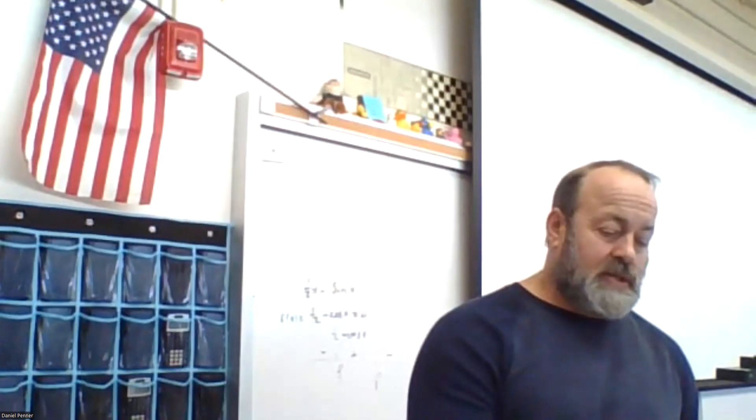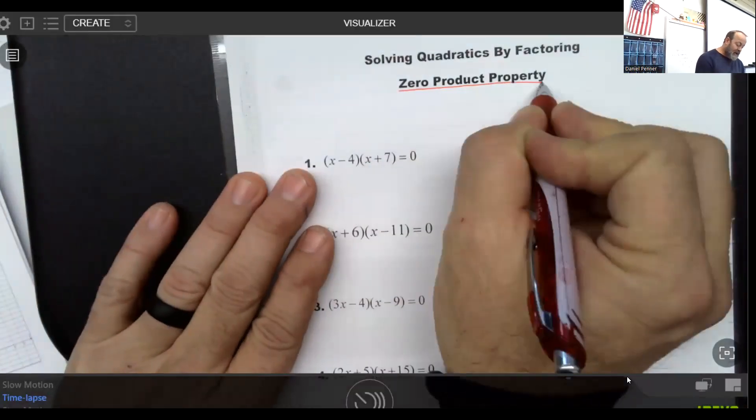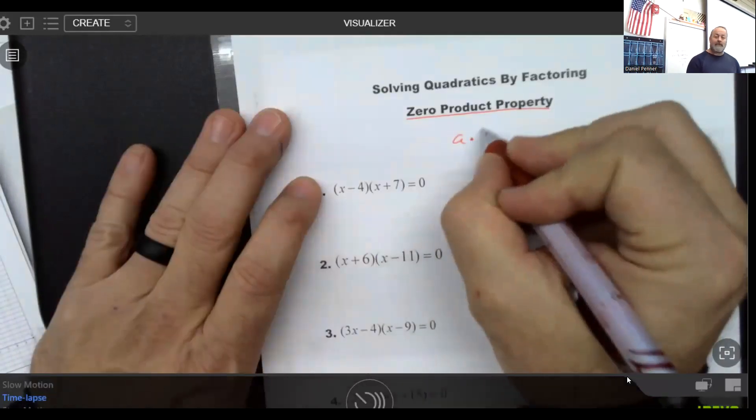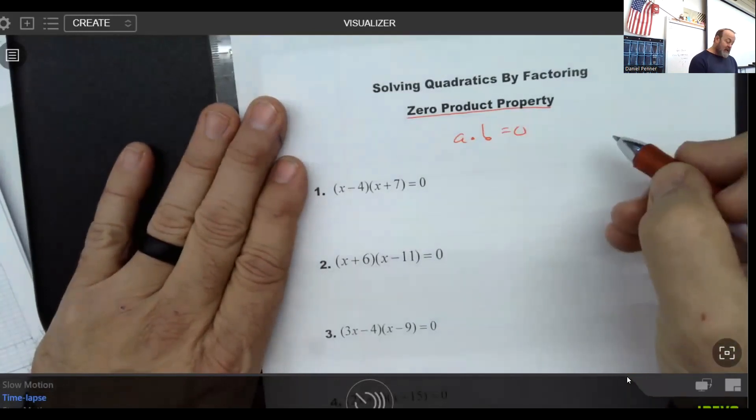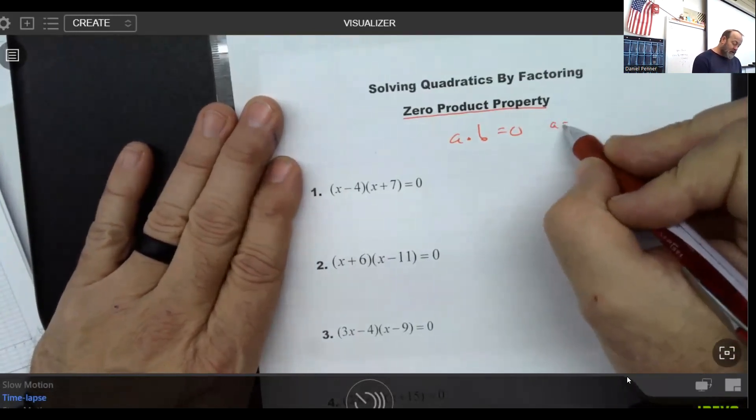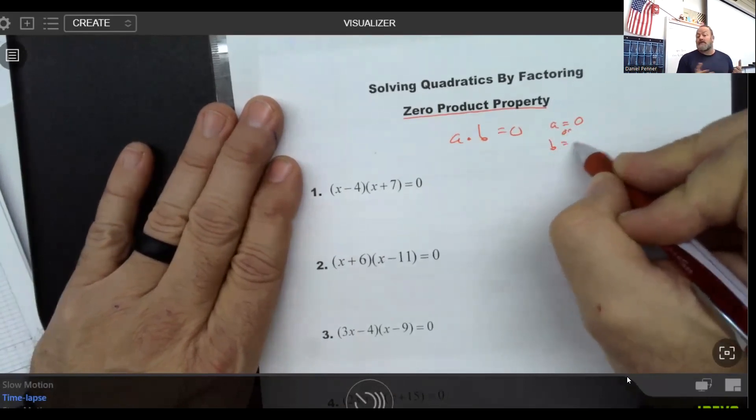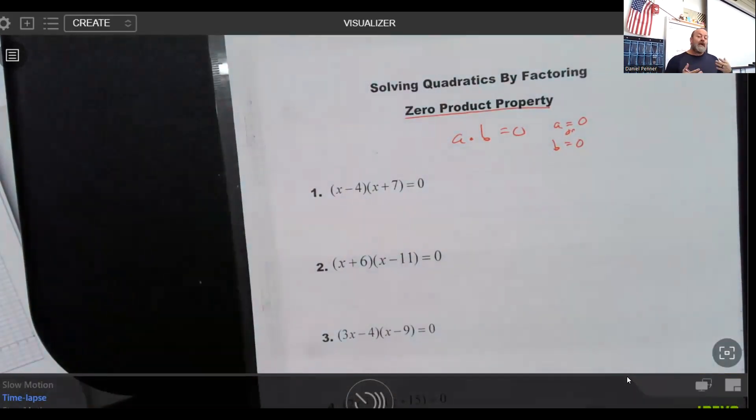So let's start with a couple of quick questions. First thing to note is we call this the zero product property. One of the properties is that if you ever have a situation where you have the product of two numbers, A and B, where the answer is zero, the only way that's possible is if A is zero or if B is zero, or possibly if both were equal to zero simultaneously. There's no other value where you can do that with mathematics. When you have a product, zero is the only one that gives you that particular story.